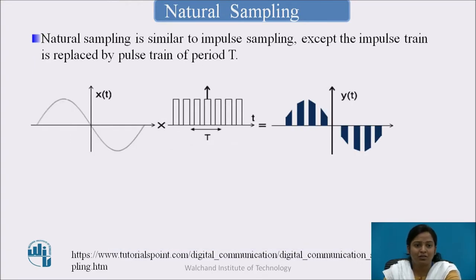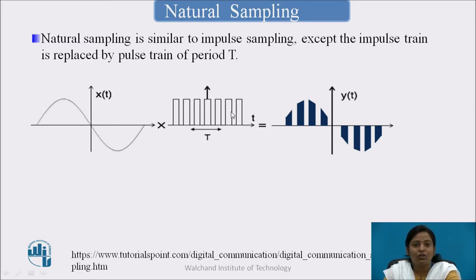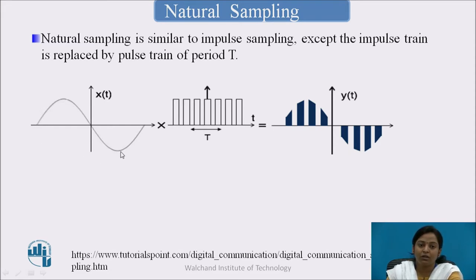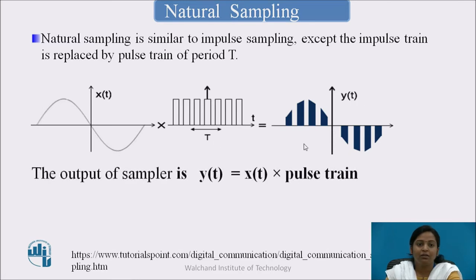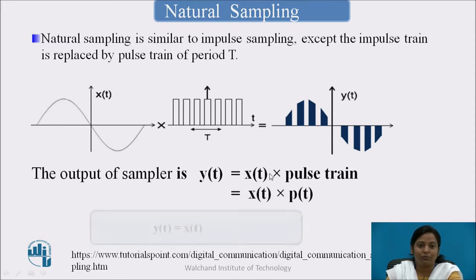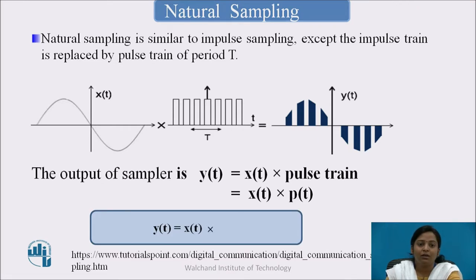Next is natural sampling. In natural sampling, the sampling function is a train of pulses having some width. The amplitude of this train of pulses changes with respect to the continuous time signal x(t). The sampled signal is y(t) = x(t) · p(t), that is y(t) = x(t) multiplied by the summation from n = −∞ to +∞ of p(t − nTs).